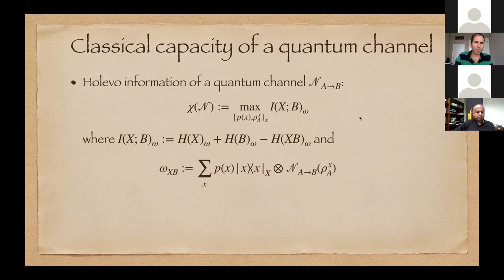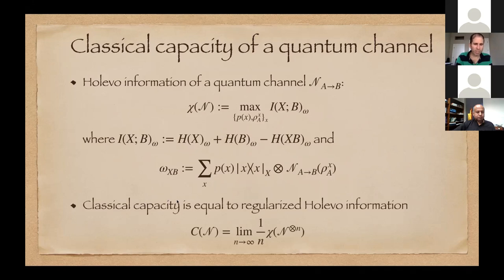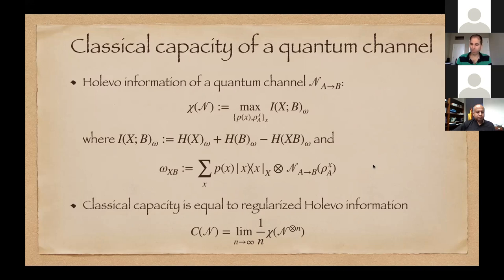The capacity is equal to the regularized Holevo information: you take the channel tensored n times, compute this quantity, divide by n, and take the limit. This is a formal mathematical expression for the capacity, but difficult to compute in practice. A lot of problems in quantum Shannon theory revolve around figuring out when the Holevo information is additive — so regularization is not necessary — and when it is necessary. There exists a channel for which the Holevo information of the channel used twice is strictly greater than twice the individual Holevo information.